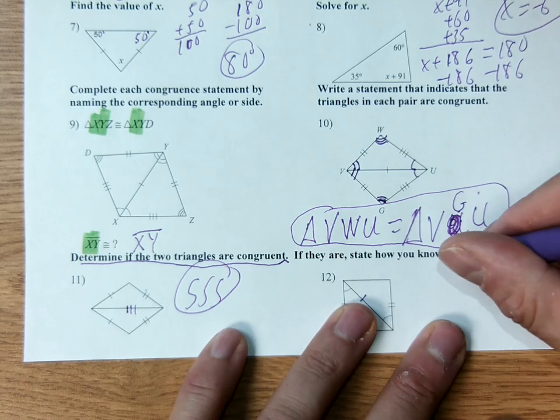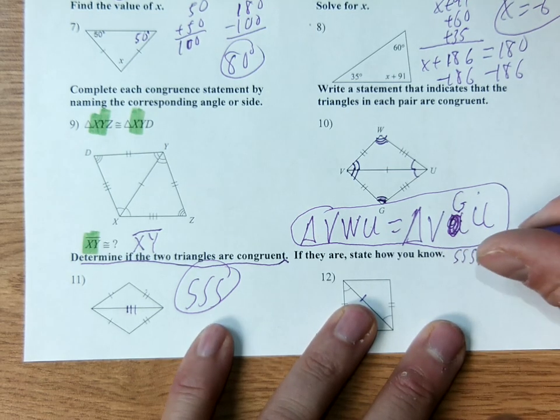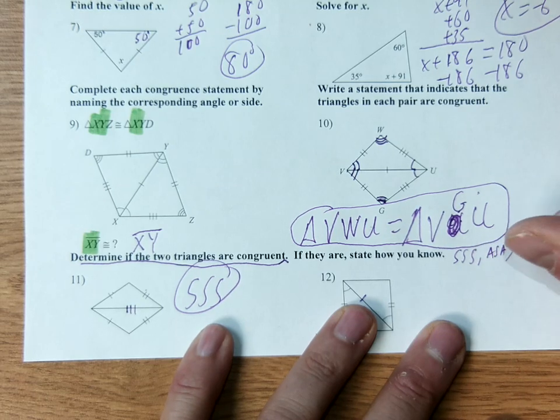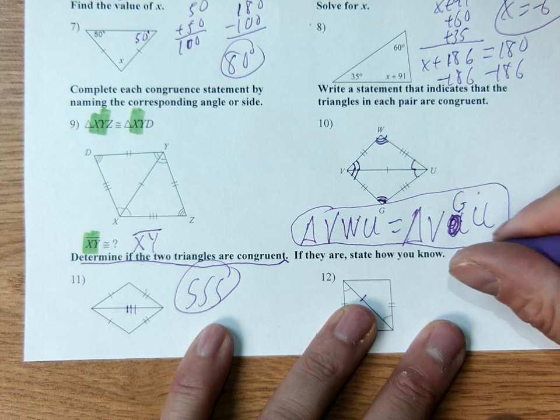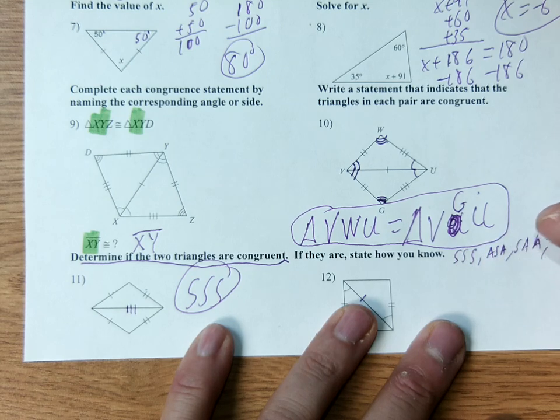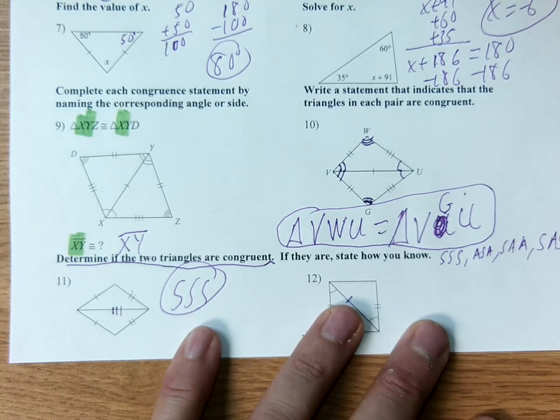What are the four theorems it is. Your answers here are going to be one of these four. Figure out which one you're going to use. Side, side, side. Angle, side, angle. Side, angle, angle. And side, angle, side. One of those four.